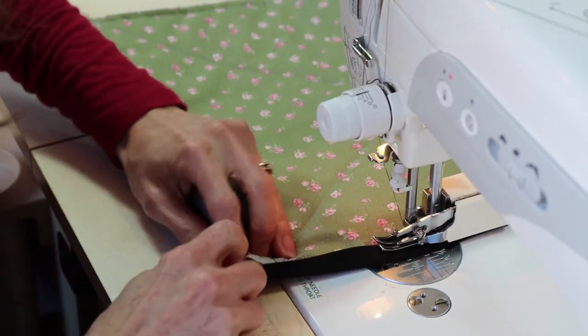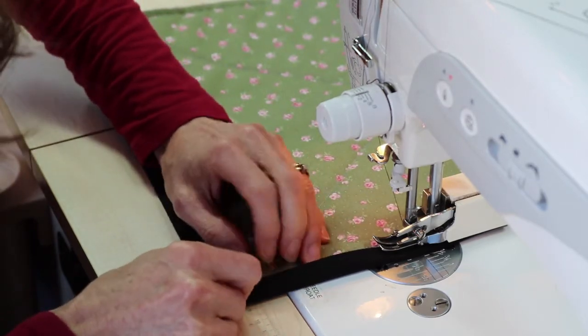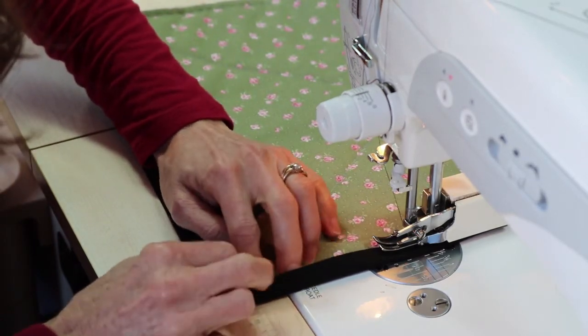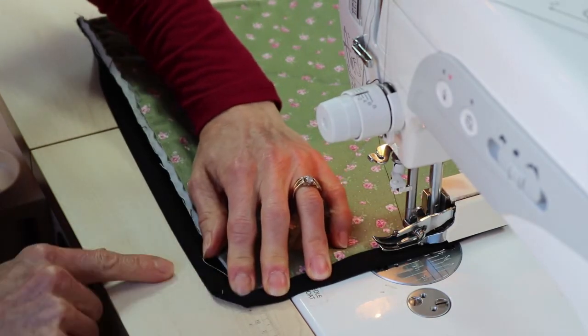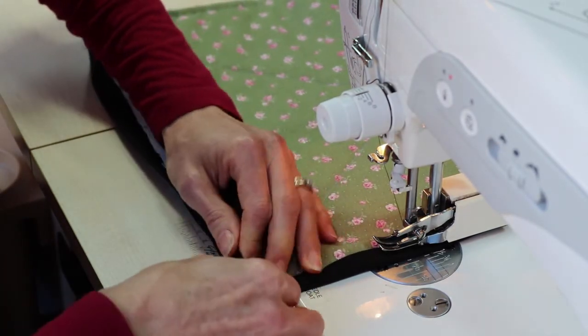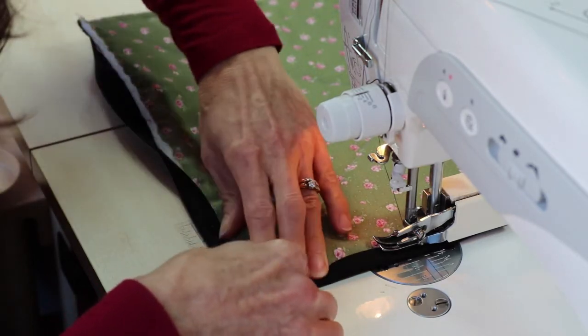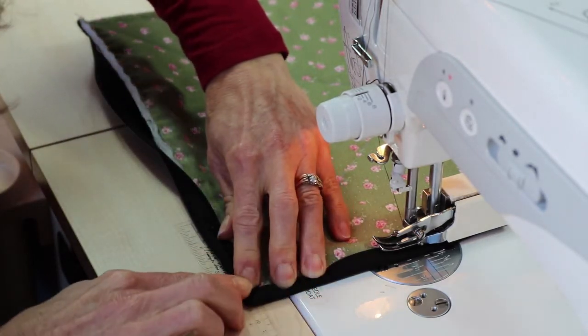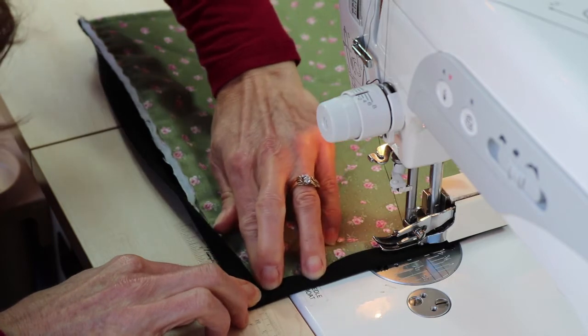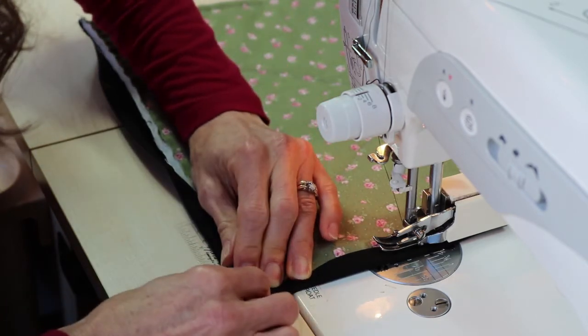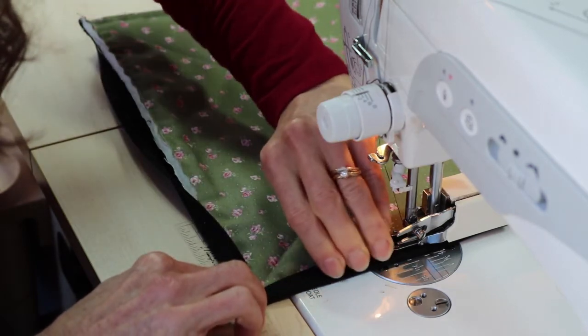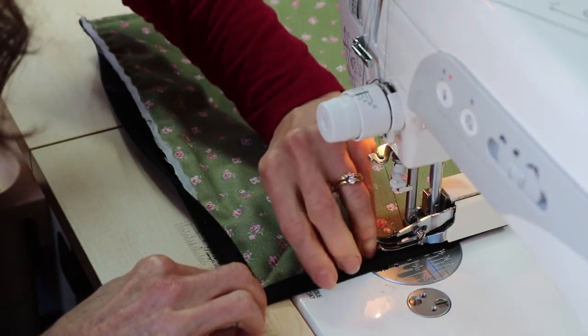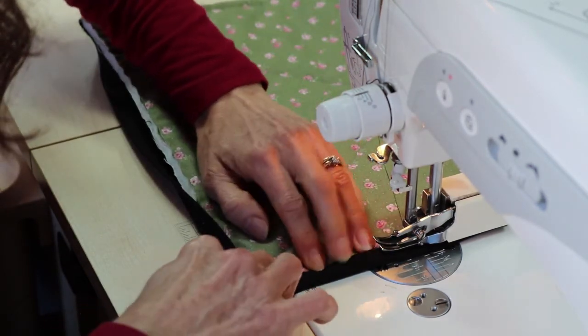When you get to the corners you're going to just work it in a little and you got a little angle 45 degree angle and that's folding over and you're just going to want to catch that underneath your presser foot and yes it's a little finicky but you'll get there.